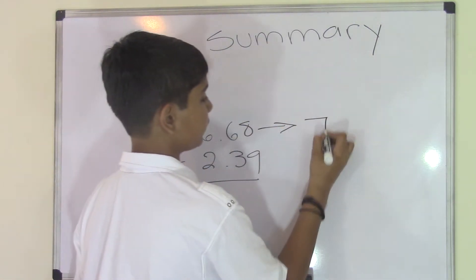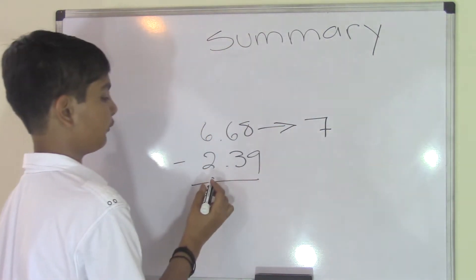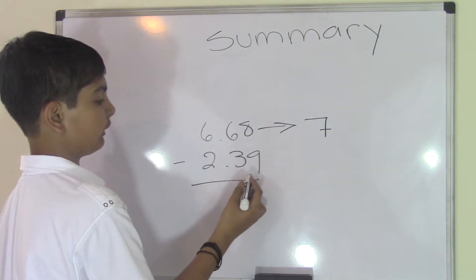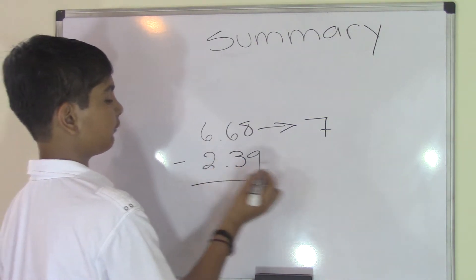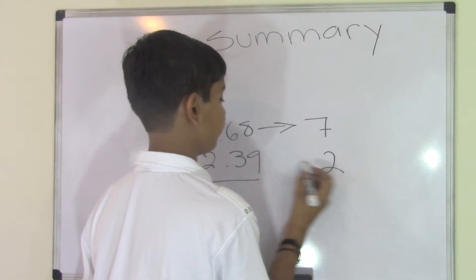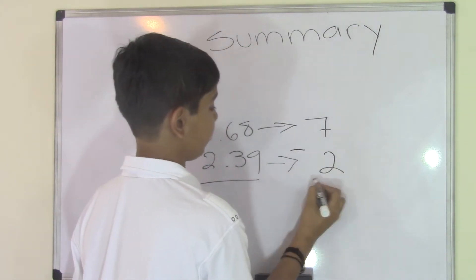Look over here, the number after the decimal point, 39, is less than 50, so we keep the 2 as it is. Bring it over here and subtract that, and we get a 5.